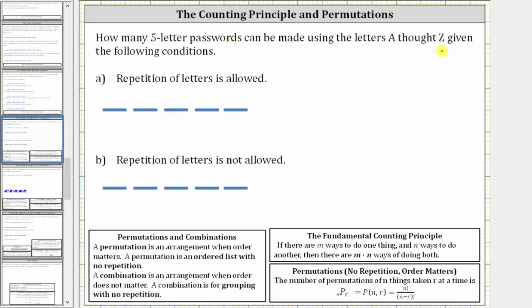There are 26 letters in the alphabet from A through Z. So there are 26 ways to select the first letter of the five-letter password. And because repetition of letters is allowed, there are also 26 ways to select the second letter, 26 ways to select the third letter, and so on. There are 26 ways to select each of the five letters.